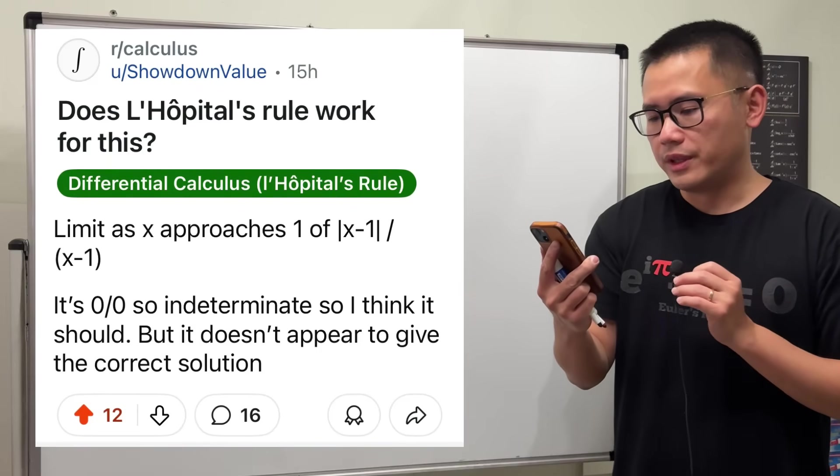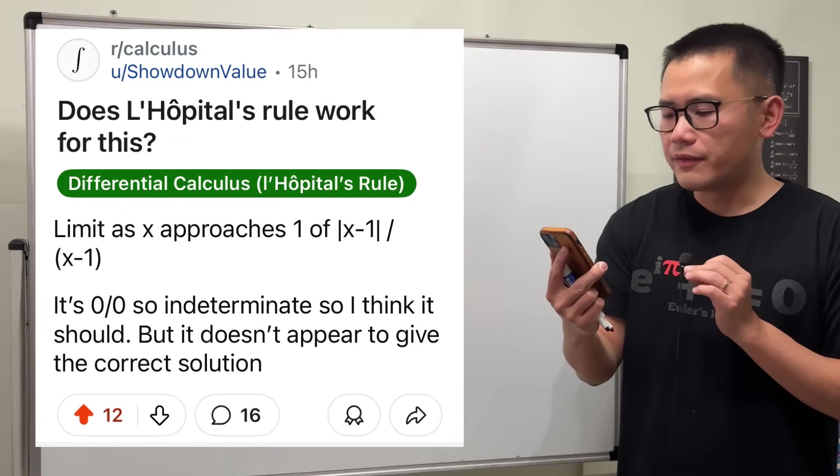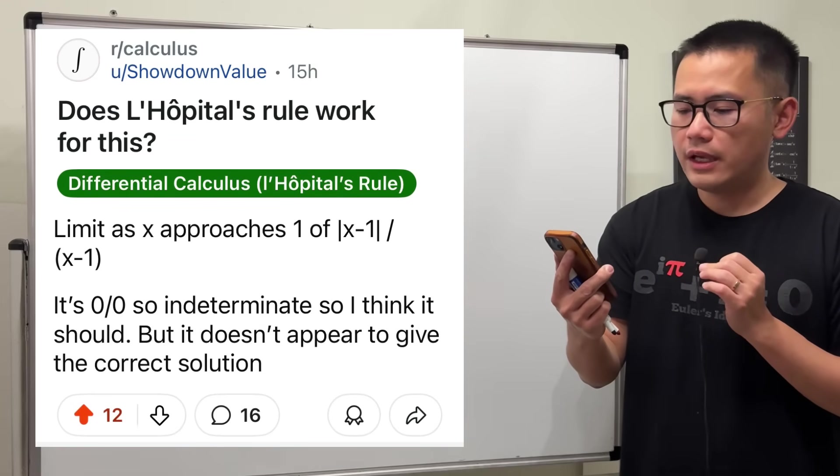Does L'Hôpital's rule work for this? We have the limit as x approaches 1 of absolute value of x minus 1 over x minus 1.